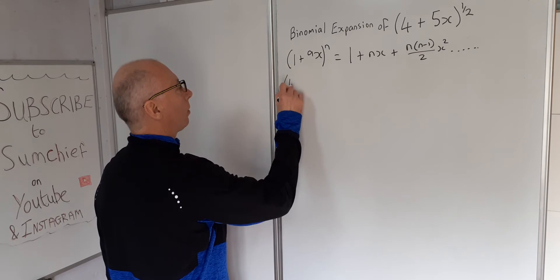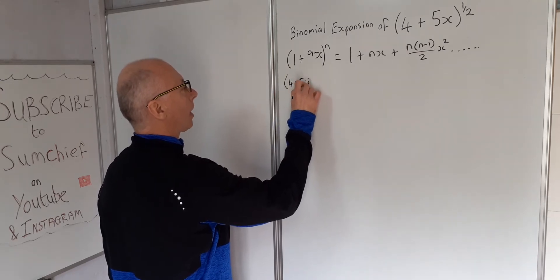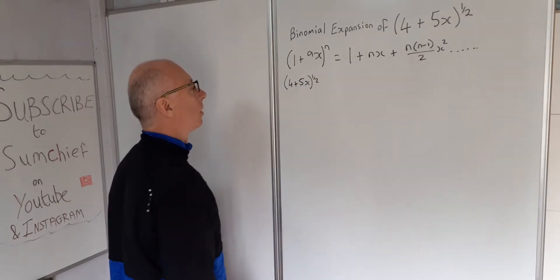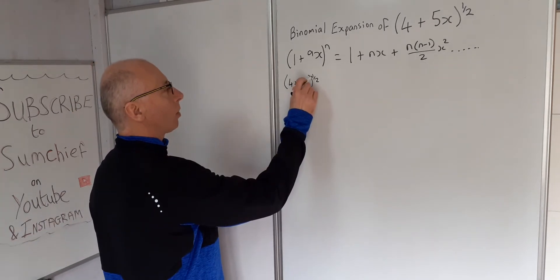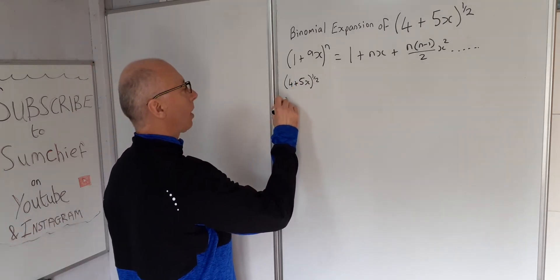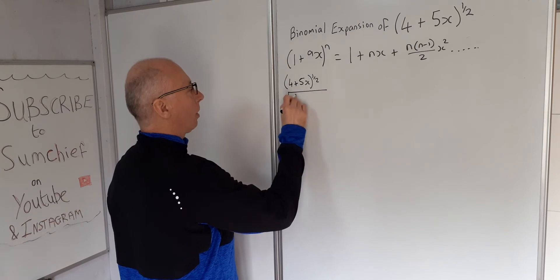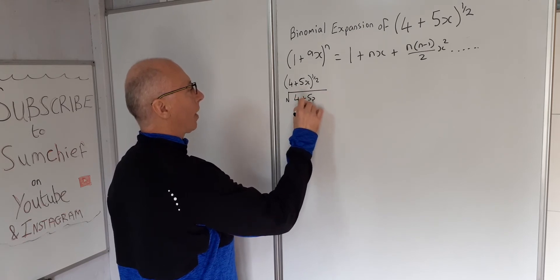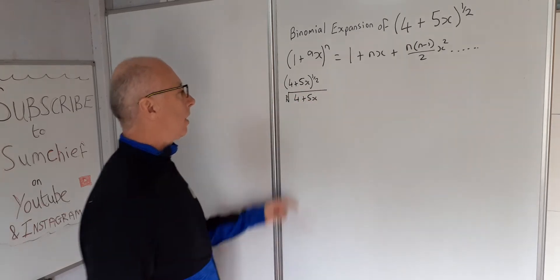So we've got 4 plus 5x to the power of a half. We can rewrite that as square root. Everything to the power of a half is a square root. So 4 plus 5x, that's our square root.